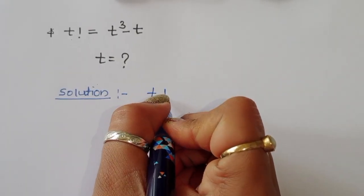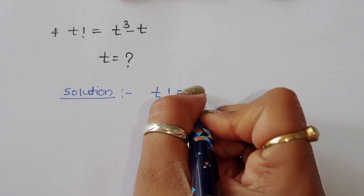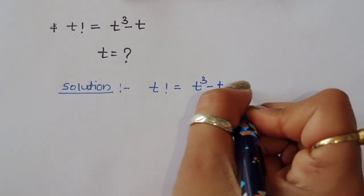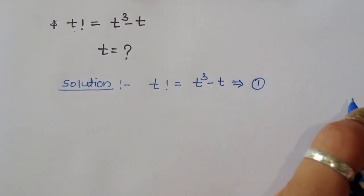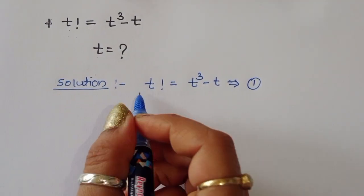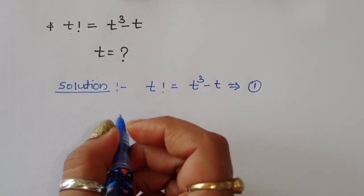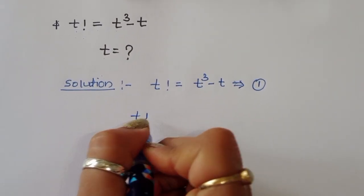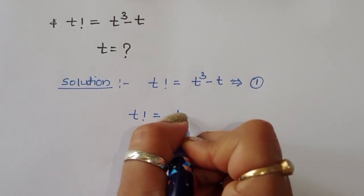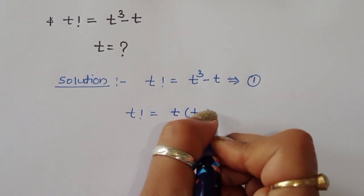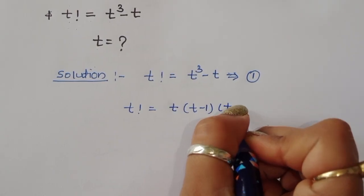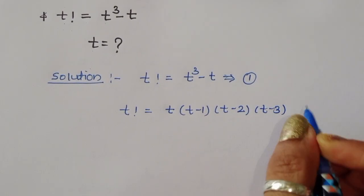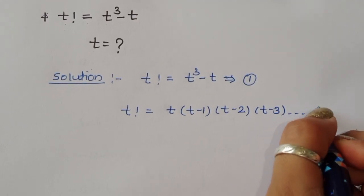Given question is: factorial of t is equal to t cubed minus t. This is equation number 1. We can write factorial of t as t times (t minus 1) times (t minus 2) times ... down to 1.